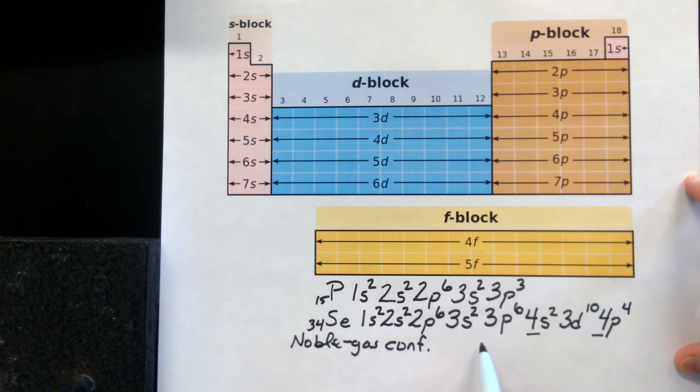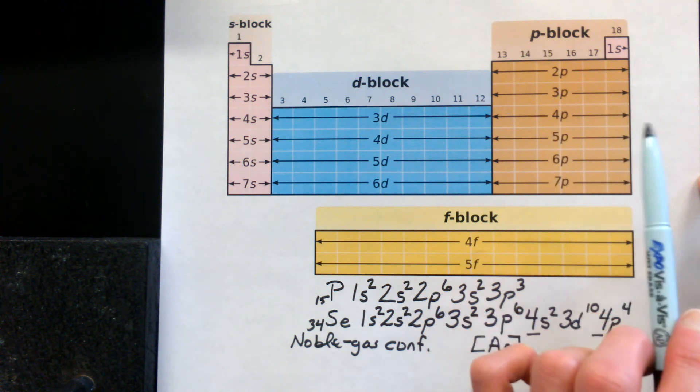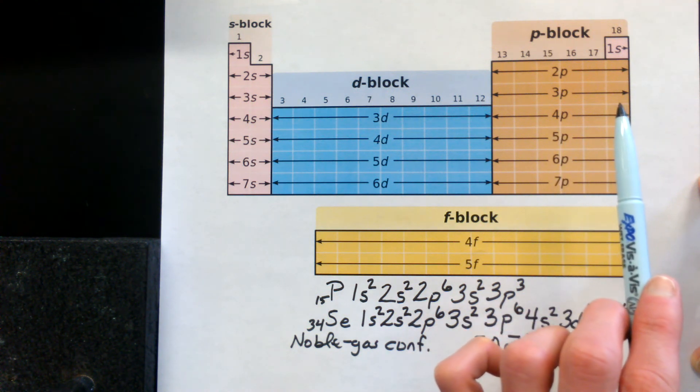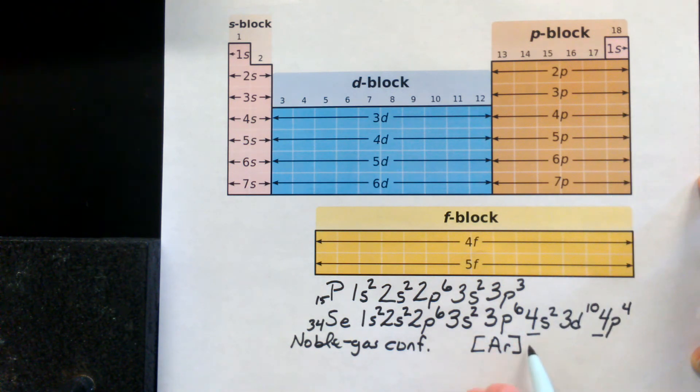So we would just, for selenium here, we would have argon, and we use brackets, square brackets, to show where we're starting. So there's argon, and then we continue forth. So argon is right here, at the end of the 3p, so that's the first 18 electrons. Then we continue, and we have the 4s2, the 3d10, and the 4p4. It helps us just to isolate the valence electrons, because those are the ones that are involved in reacting and chemical bonding and so forth. So it kind of isolates them, so you can just see what is available for reactions.